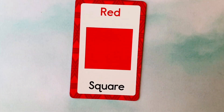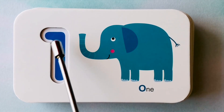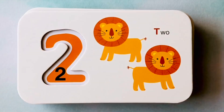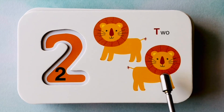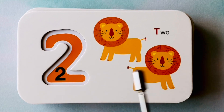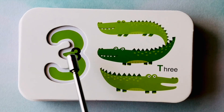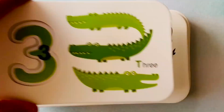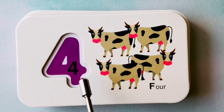Amazing job. Let's learn our numbers. How many elephants do you see? I see one elephant. This is the number one. How many lions do you see? I see one, two lions. This is the number two. How many alligators do you see? I see one, two, three alligators. This is the number three. How many cows do you see? I see one, two, three, four cows. This is the number four.